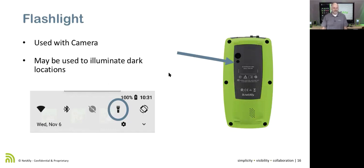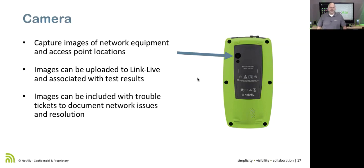There's a flashlight on here. If we swipe down, we can click on the flashlight and turn it on. It can be used with the camera, or to illuminate a dark area — like looking behind a desk to see where something is connected. The unit also has a camera. I'll show you how we can take a picture with this tool and upload it to LinkLive, attaching it to a test result.